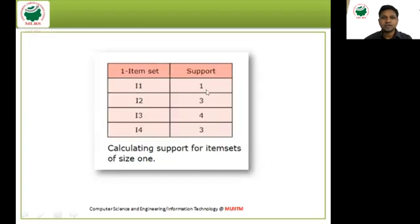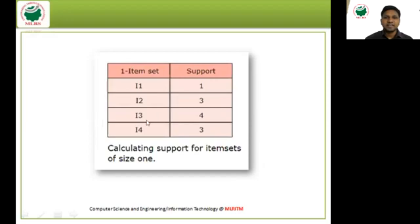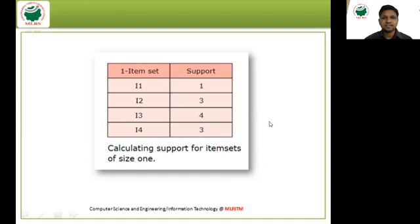Now calculate the support of I2. In T1, I2 is available; in T2, I2 is available; in T3, there is no I2; in T4, I2 is available — so the support of I2 is 3. Similarly, the support of I3 is 4 and the support of I4 is 3. This gives us the item sets of size 1 with their support values.